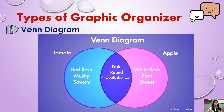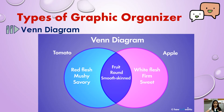So how do we make a Venn diagram? First, make a list of descriptive terms — describe using adjectives each subject, for tomato and for apple. For tomato, we have: mushy inside, red in the middle, round, savory tasting, smooth skinned, and a fruit. For apple, you write: red, firm inside, white in the middle, round, sweet tasting, smooth skin, and also a fruit.